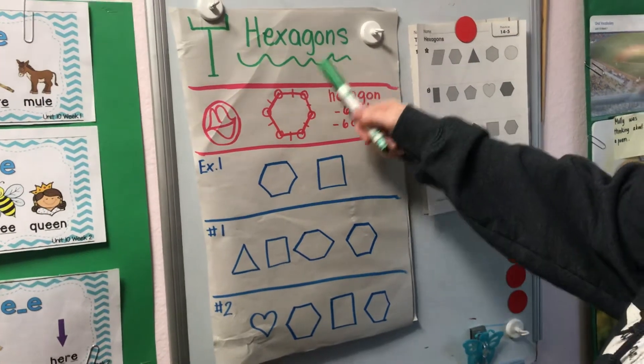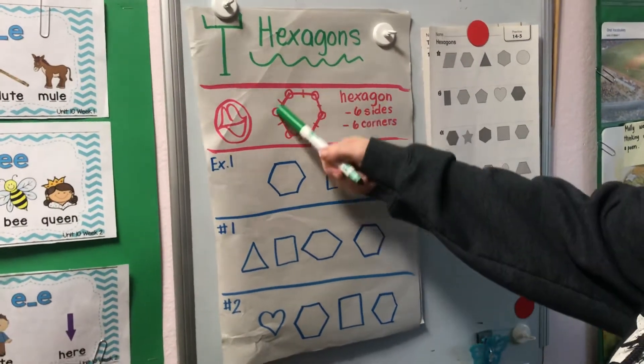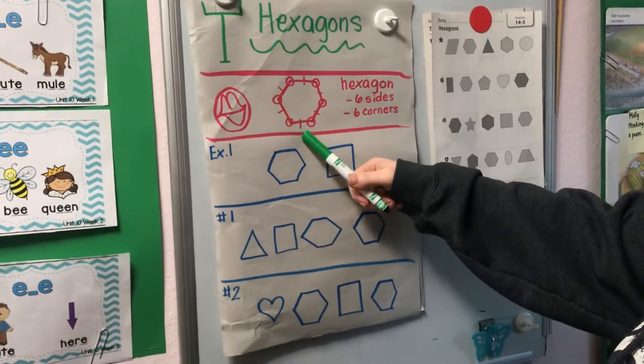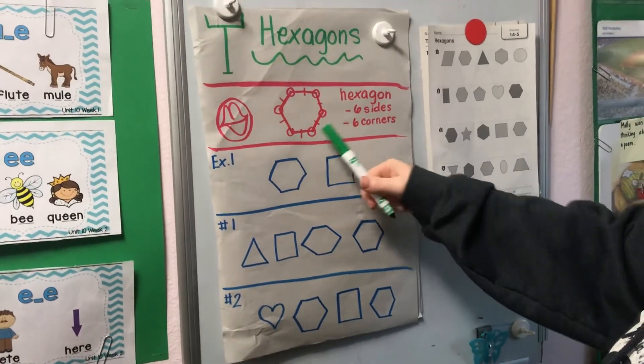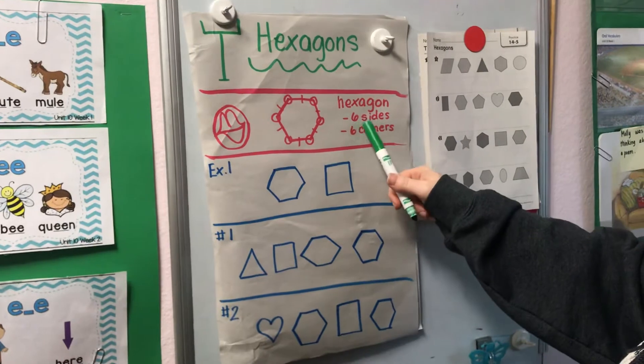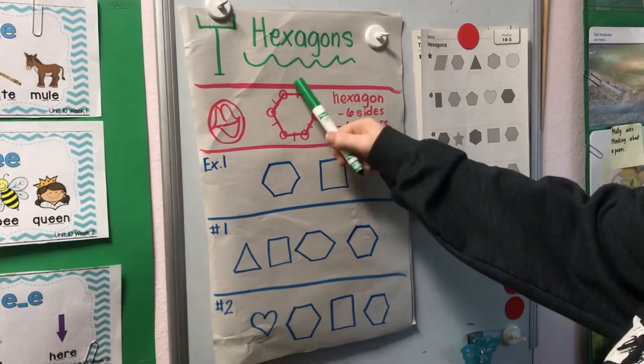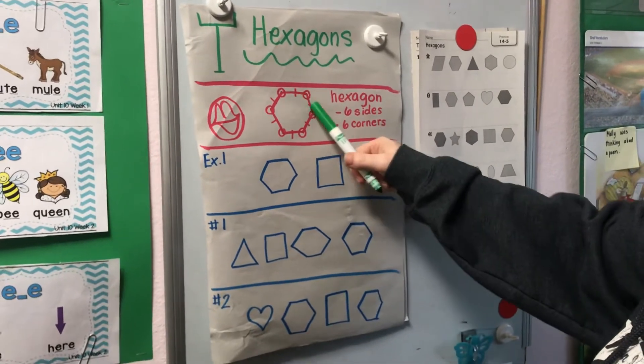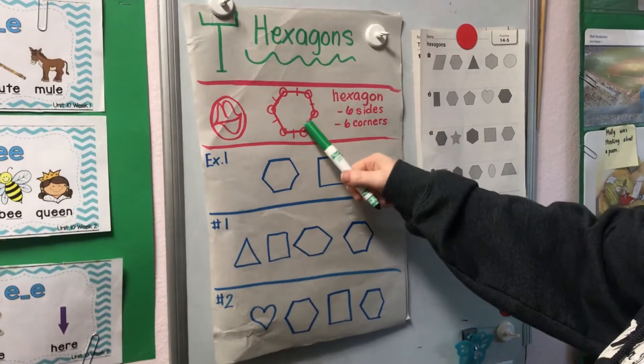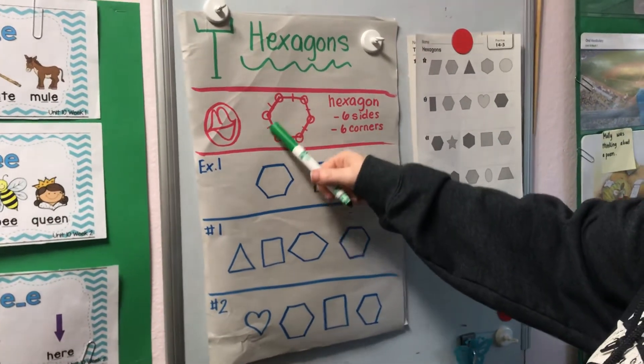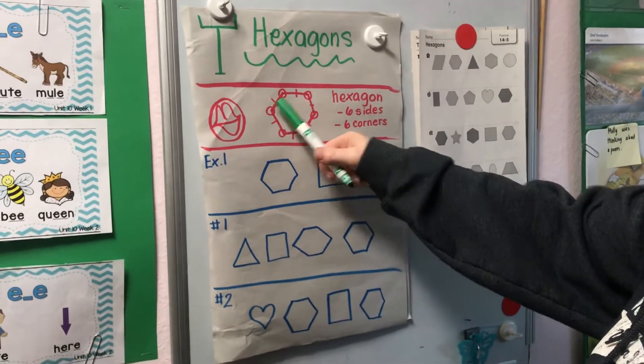Hexagons! Today we're going to learn about a shape called a hexagon. A hexagon has six sides: one, two, three, four, five, six.